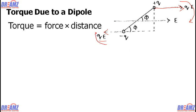So there will be two torques, and both torques are in the same direction — in this picture, it is clockwise — meaning the total torque is produced inside the dipole. Now we have to find the total torque. We know that torque is force into distance. The force is qE, and the distance is 2l.